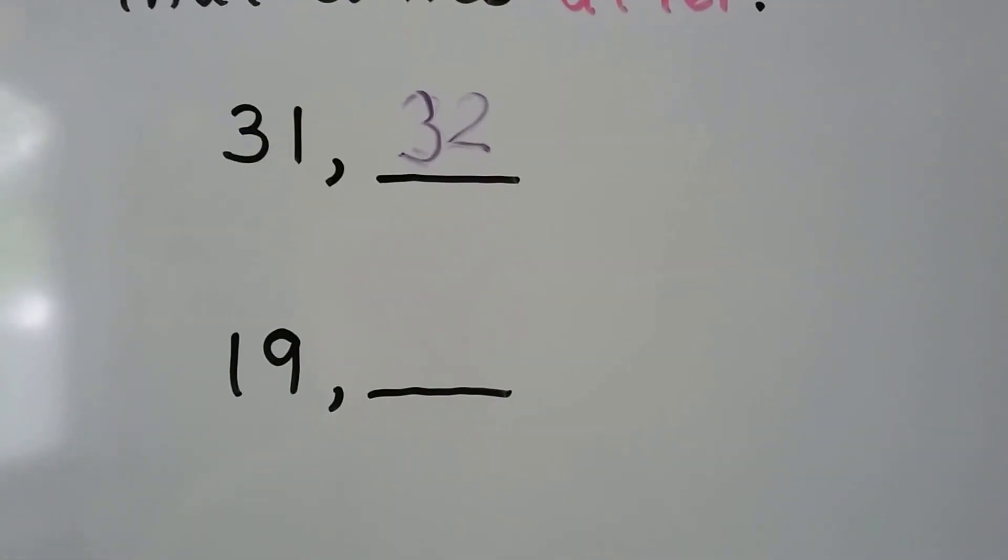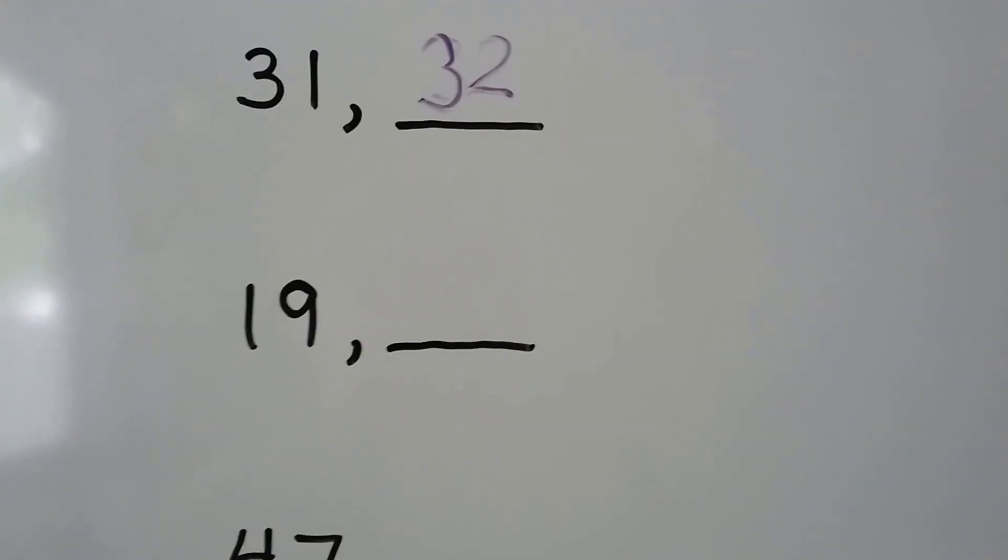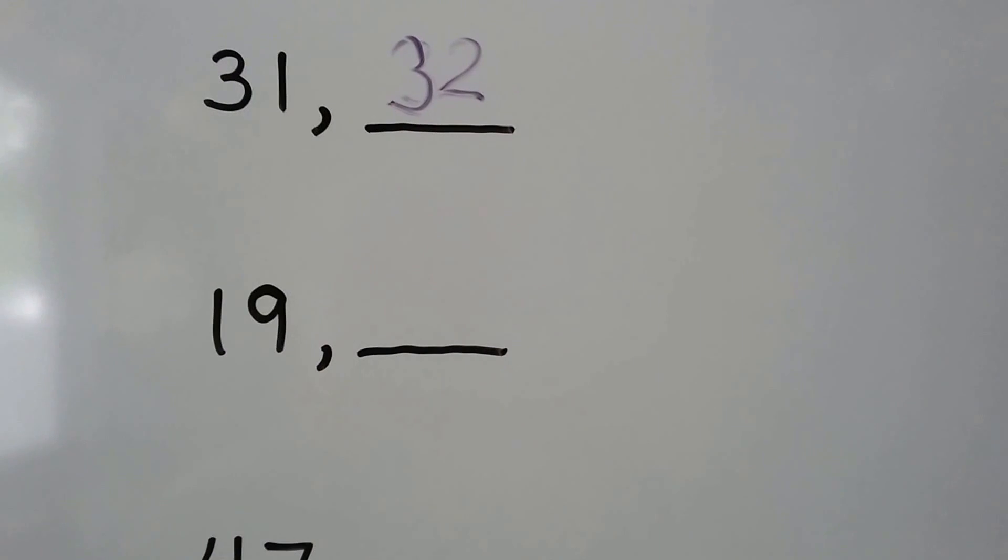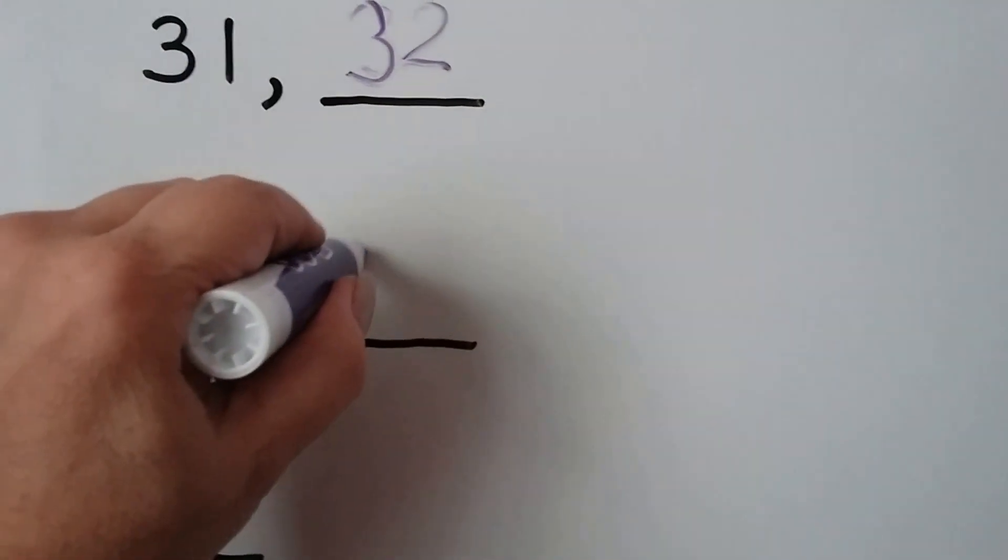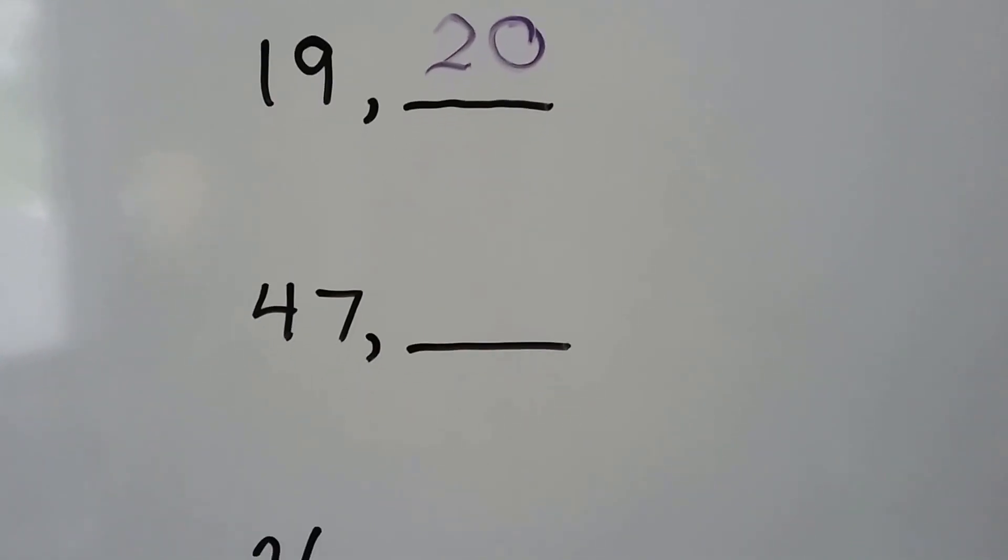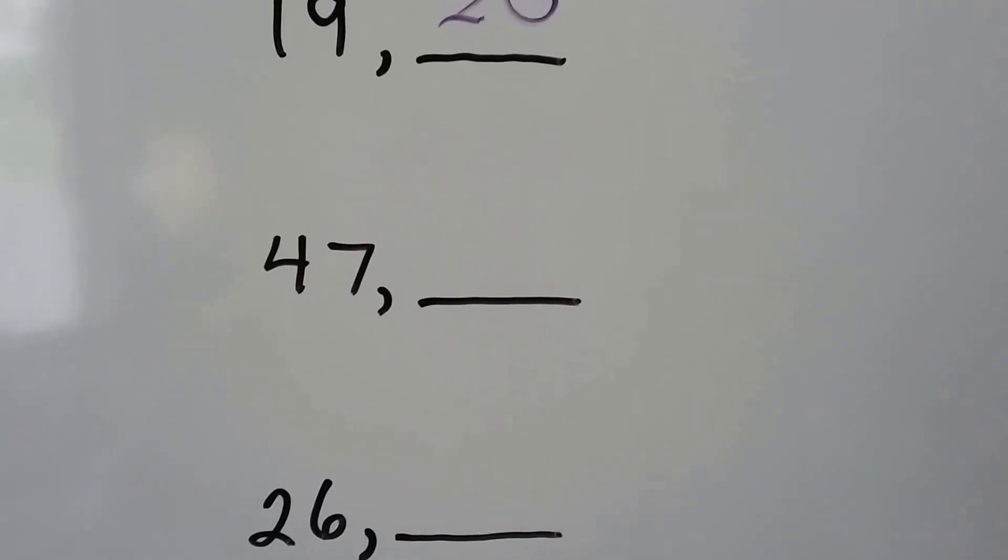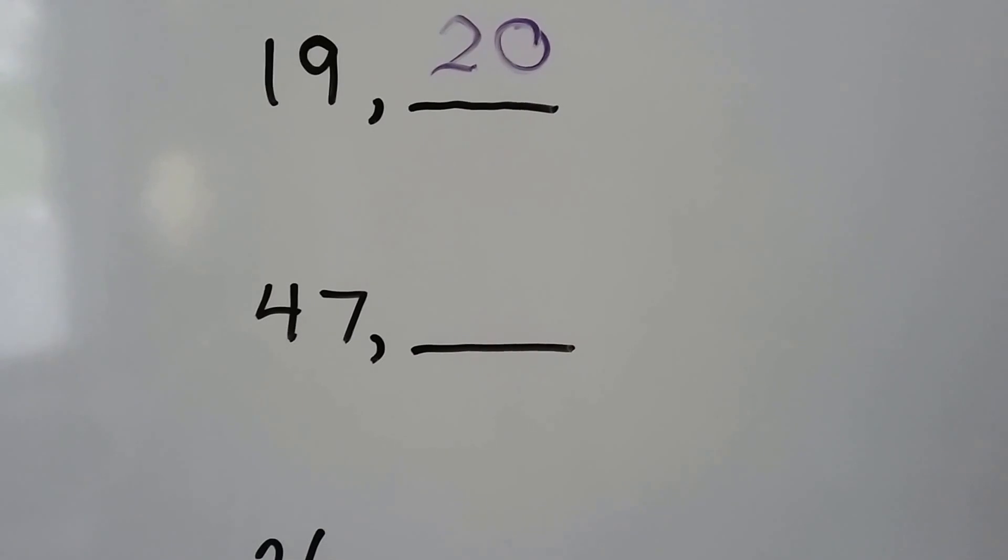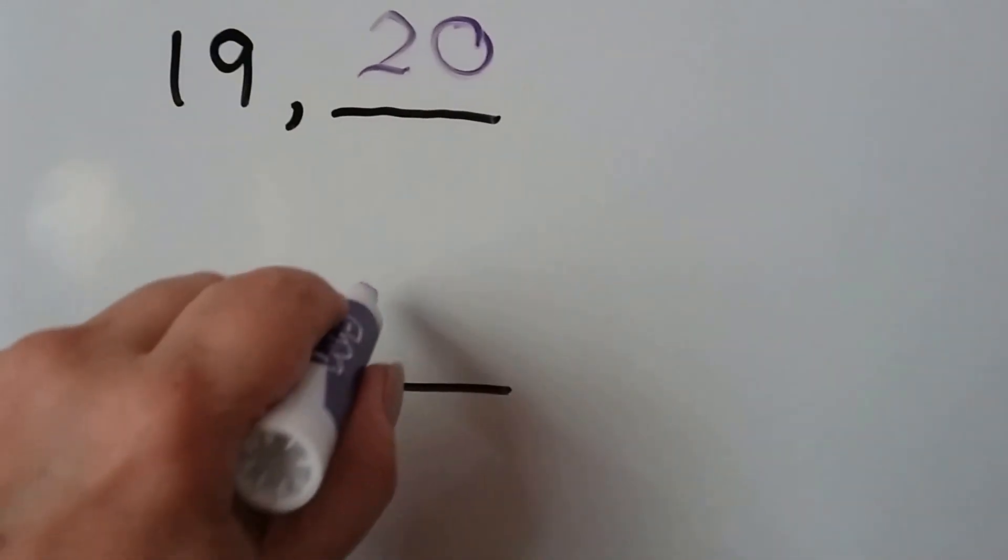We have 19. What number comes after 19 when we count? 19, 20. What number comes after 47 when we count? 47, 48.